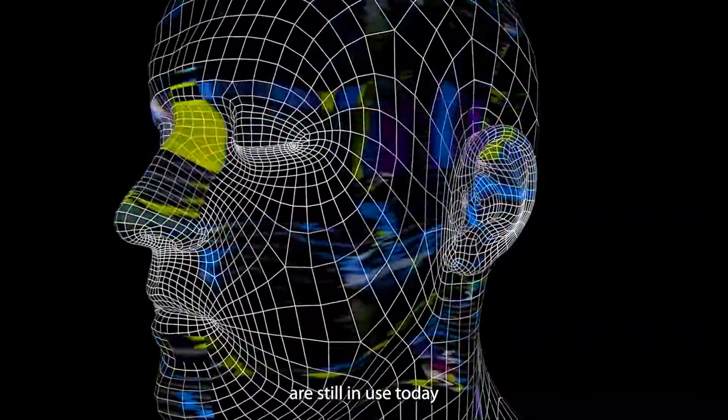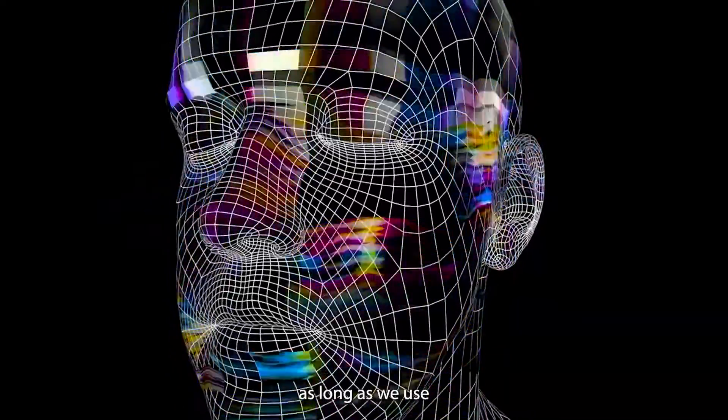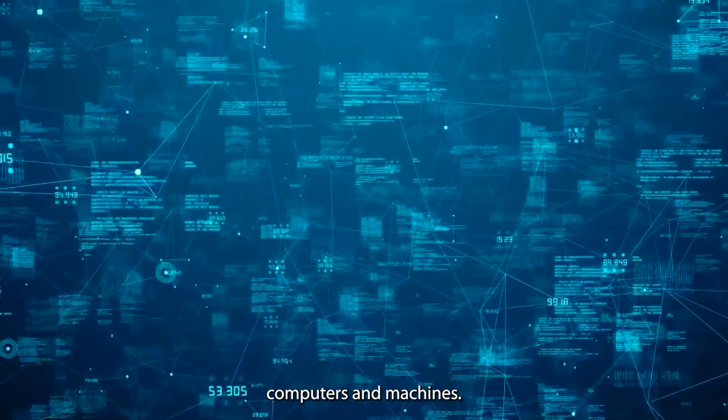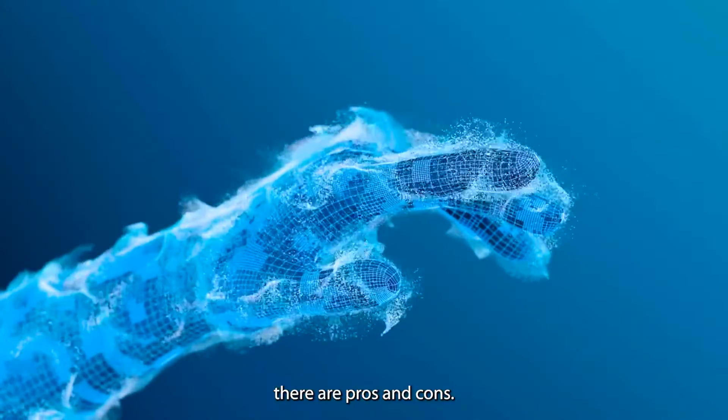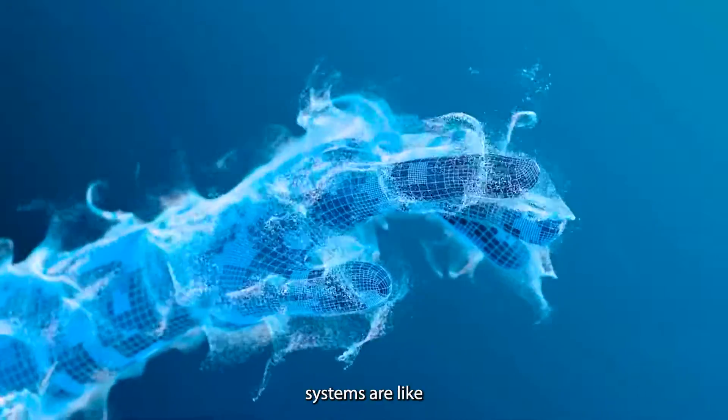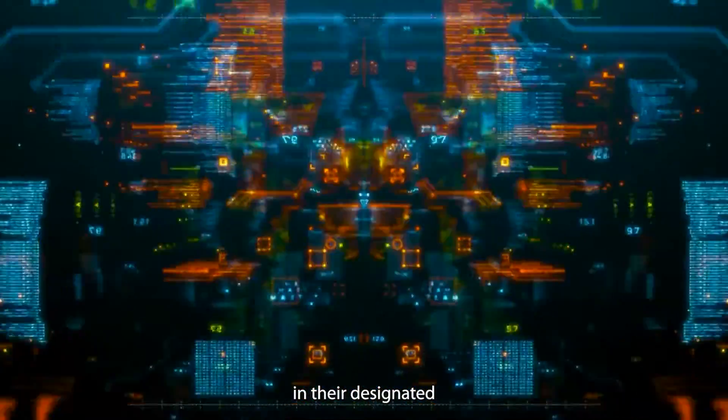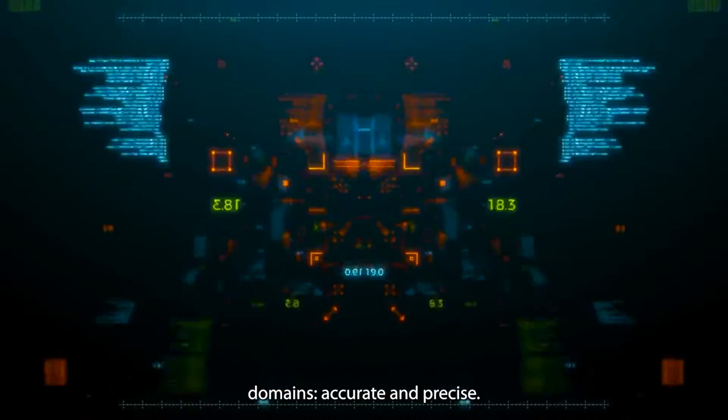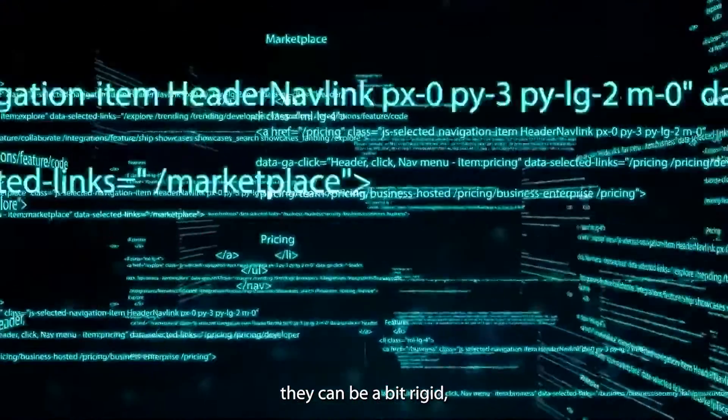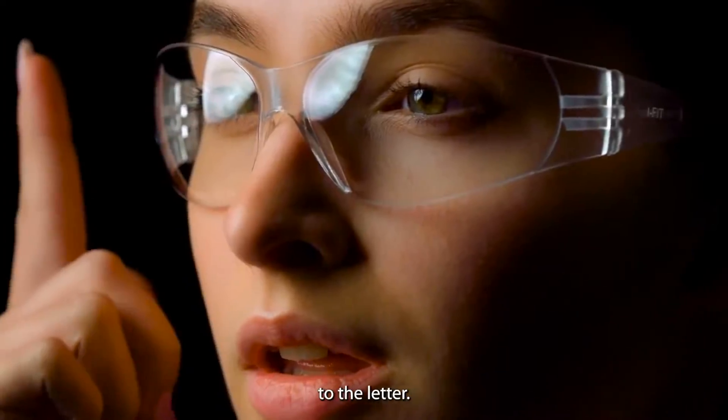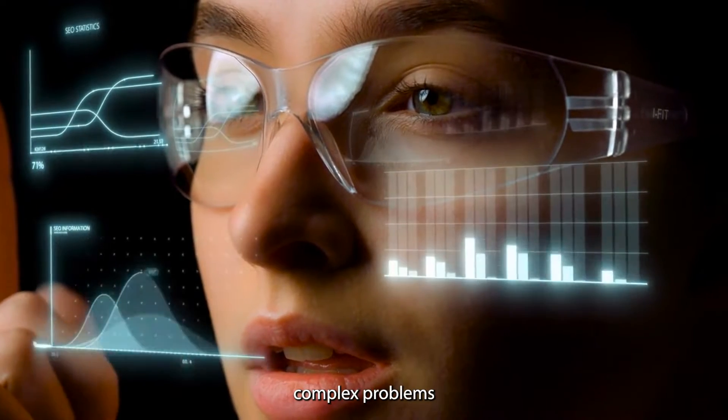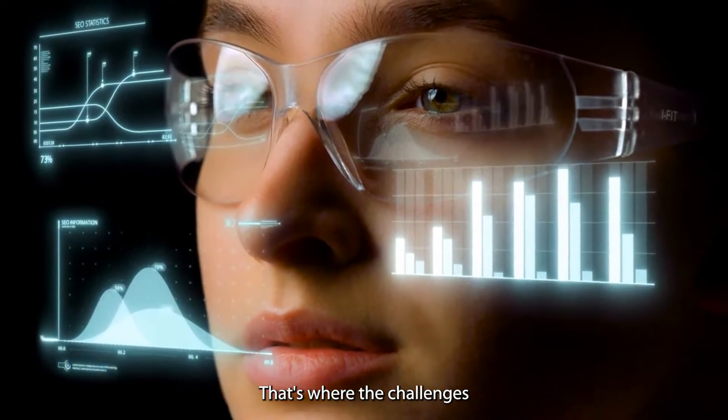These rule-based AIs are still in use today and will continue to be in use as long as we use computers and machines. But of course, there are pros and cons. Rule-based systems are like well-tuned machines in their designated domains, accurate and precise. However, they can be a bit rigid, like following a recipe to the letter. Scaling them to tackle complex problems, that's where the challenges arise.